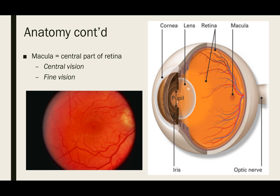The macula, which is the area that is affected in AMD, is a central part of the retina. The macula is responsible for central vision as well as fine vision. As a result, damage to the macula, as occurs in AMD, causes dark spots in the center of the visual field and decreases your ability to make out fine details.